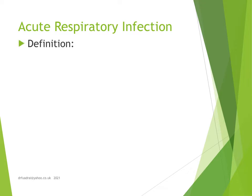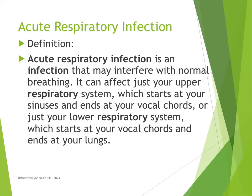As far as acute respiratory infection is concerned, it is an infection that may interfere with normal breathing. It can affect just your upper respiratory system, which starts at your sinuses and ends at your vocal cords, or just your lower respiratory system, which starts at your vocal cords and ends at your lungs. So acute respiratory infection has been divided into two parts: the upper respiratory system and the lower respiratory system.